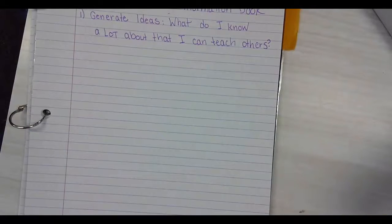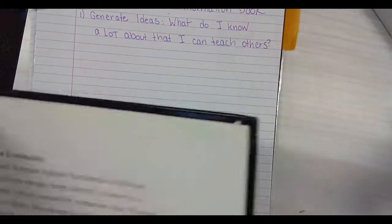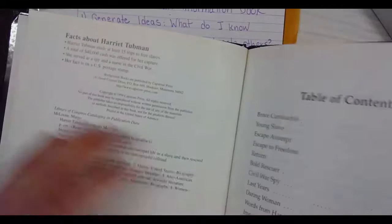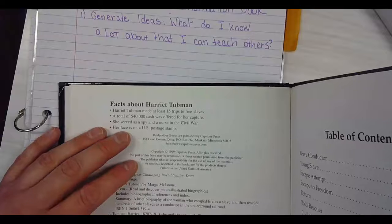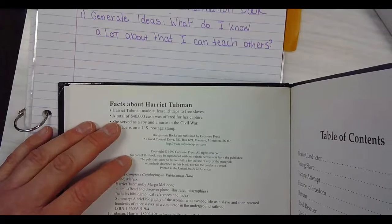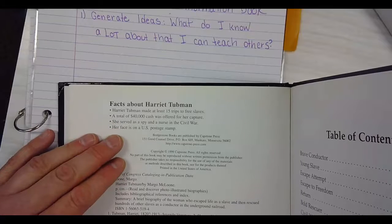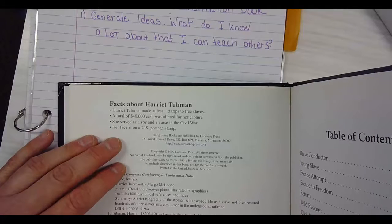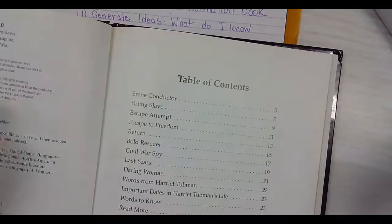This one looks like it might be more typical. This is another Harriet Tubman book. There's some facts, these are quick facts. She made at least 15 trips to free slaves. A total of $40,000 cash was offered for capture. She served as a spy and a nurse during the Civil War. Her face is on a U.S. postage stamp.